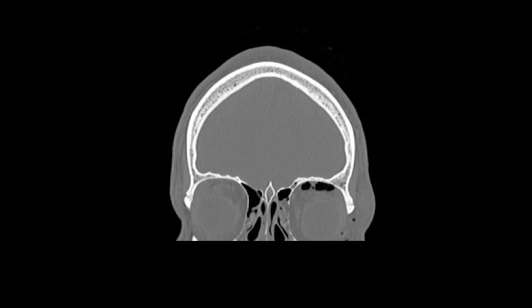This is a coronal bone-enhanced CT slice with the patient looking out the screen towards you. Perhaps the most important thing to notice immediately is that there is gas within the left orbit and around the orbit within the periorbital soft tissues. This patient suffered trauma, and you can see that there is a fracture through the left medial orbital wall.